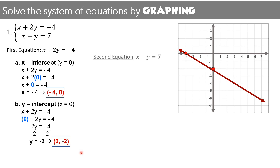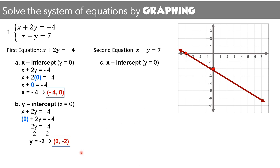Now let us proceed with the second equation, 2x minus y equals 7. To get the x-intercept, change y to 0. In the equation 2x minus y equals 7, cancelling y gives x equals 7. The ordered pair for the x-intercept is (7, 0).